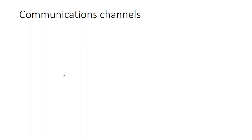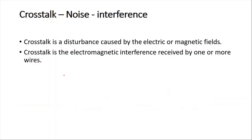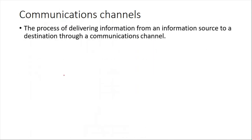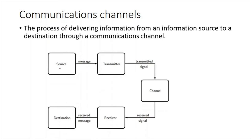Now let's look at our communication channels and relate them to attenuation, bandwidth, crosstalk, interference, and noise. The process of delivering information involves a source, a transmitter that converts your message into electrical signals, a channel — which can be a radio wave, coaxial cable, or twisted cable — through which the signal is transmitted to a receiver that converts the signal back to, for example, voice so you can hear the information.